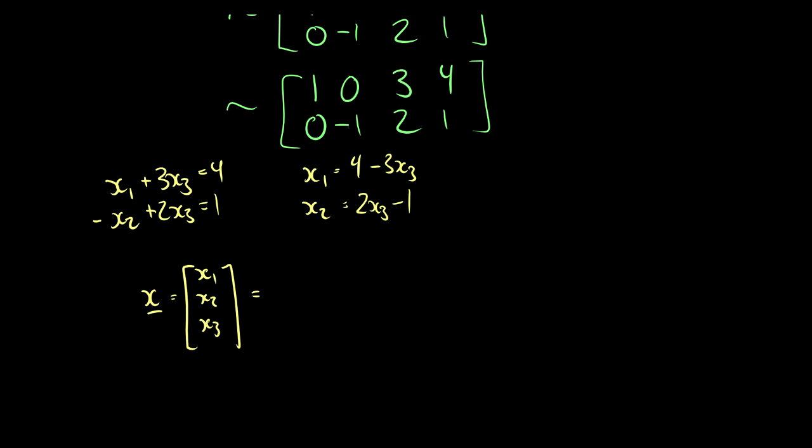So x1 is equal to 4 minus 3x3, x2 is equal to 2x3 minus 1, and we know that x3 is just equal to x3 because it's free. Now we can separate some things.